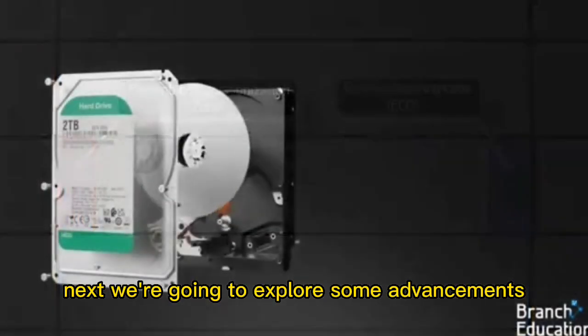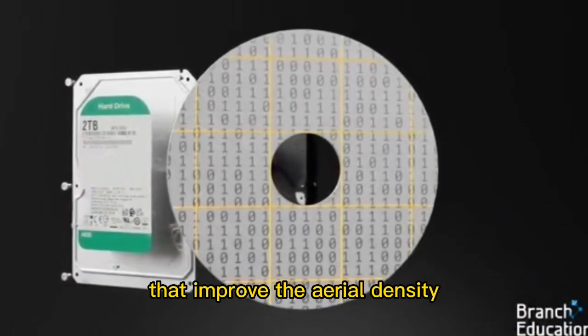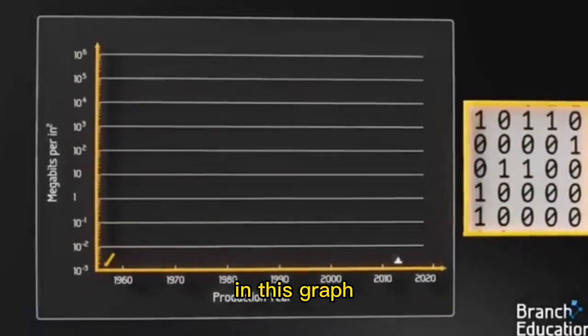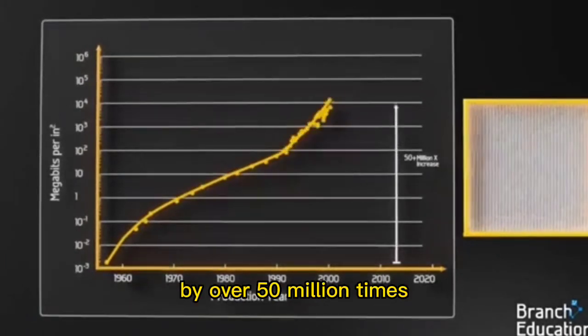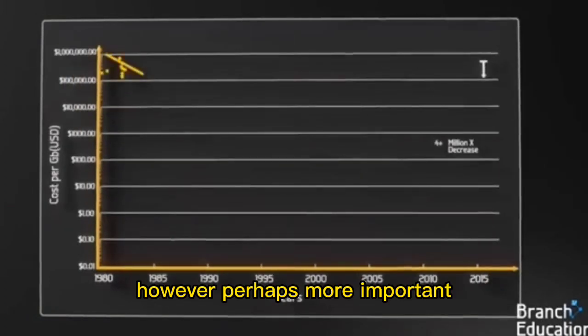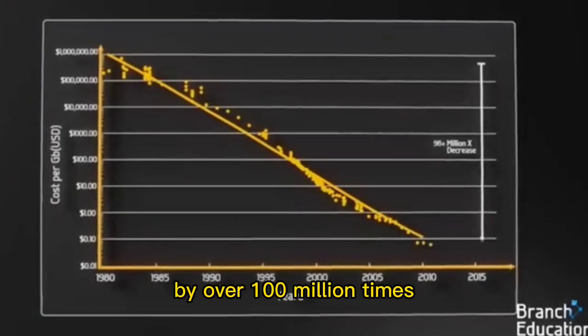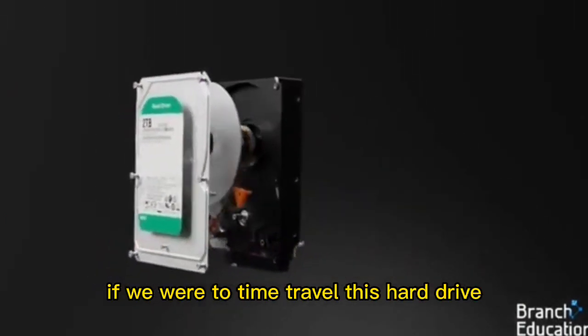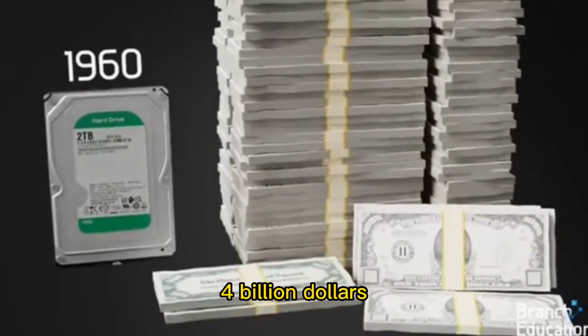Next, we're going to explore some advancements in hard disk drive technology that improve the aerial density, which is the number of bits that can fit within a given area. In this graph, you can see how aerial density has increased by over 50 million times throughout the past 60 years. However, perhaps more important is that the cost to store trillions of bits of data has dropped by over 100 million times. Just imagine, if we were to time travel this hard drive back to the 1960s, it would be worth over $4 billion.